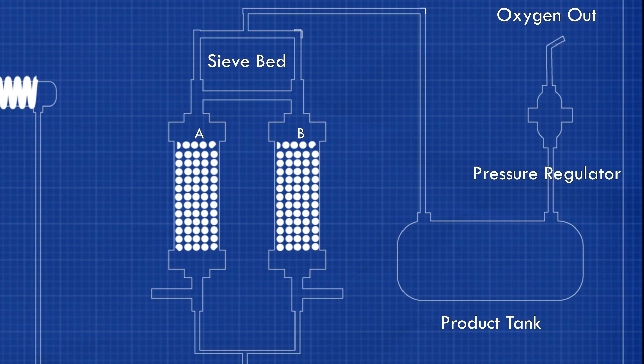However, there is still one problem. Eventually nitrogen clogs up sieve bed A, reducing its performance. So the valve on A closes and the normal air is sent instead to sieve bed B to be converted to pure oxygen, and some pure oxygen from it is sent backwards to A to clean it.